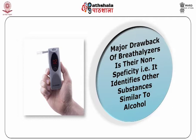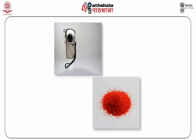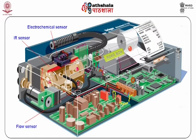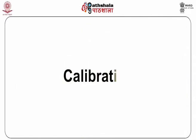One major drawback of traditional breath analysers is their non-specificity — that is, the machine also identifies other substances which have similar reactivity or molecular structure to alcohol. Traditional breath analysers use a solution of potassium dichromate for detecting alcohol, but it is a strong oxidiser and other functional groups can be oxidised by it, which may result in false positive readings. Similarly, in the case of infrared-based breath analysers, other groups — most commonly carboxylic acids and aromatic ring compounds — can also give similar absorbance readings.